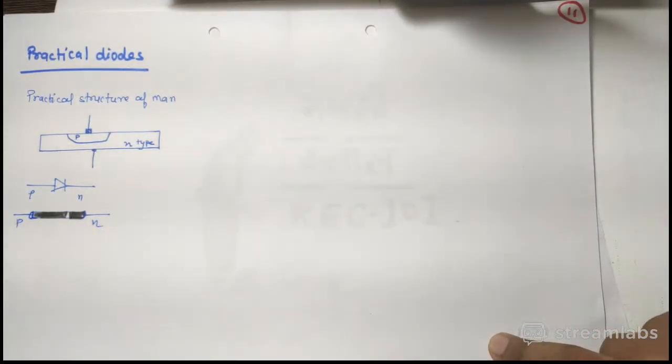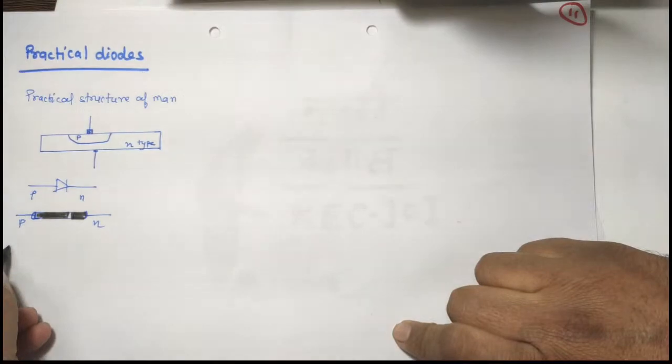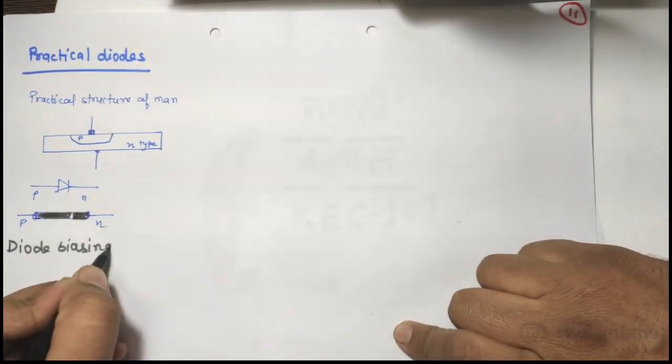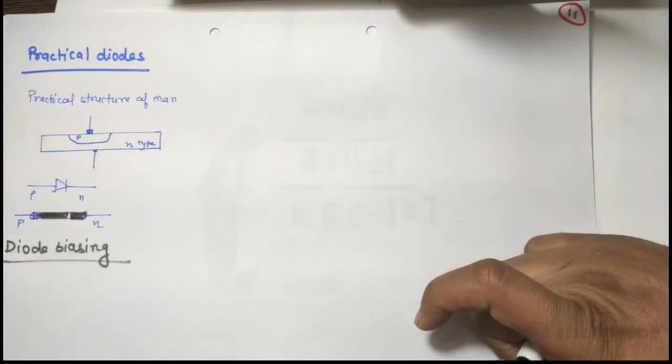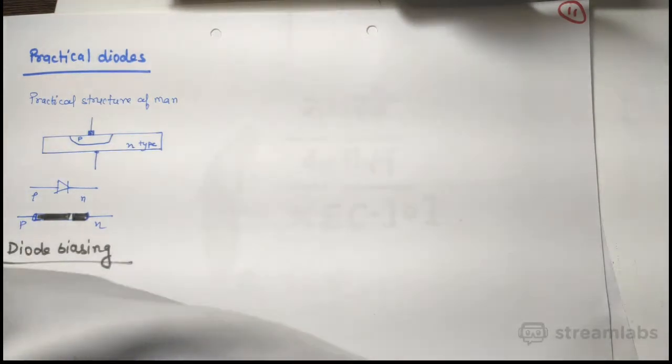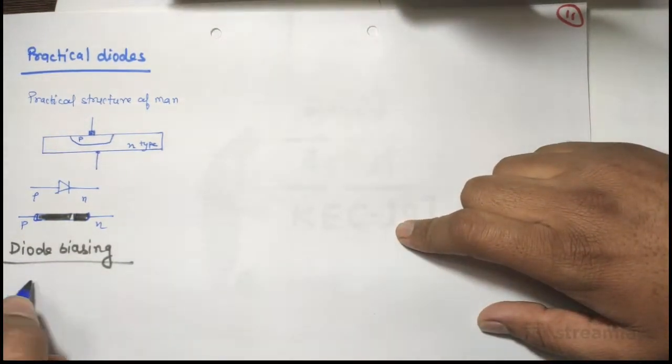Next thing that we have discussed is diode biasing. So diode biasing, we have seen that when you connect a diode, this can be in a forward bias.